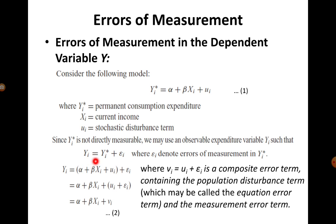When we run this second model, our yi effectively becomes α + β·xi plus a composite error term vi. This composite error term vi contains both the population disturbance term ui and the measurement error term εi. Because it is a combination of both types of errors, it is called a composite error term.